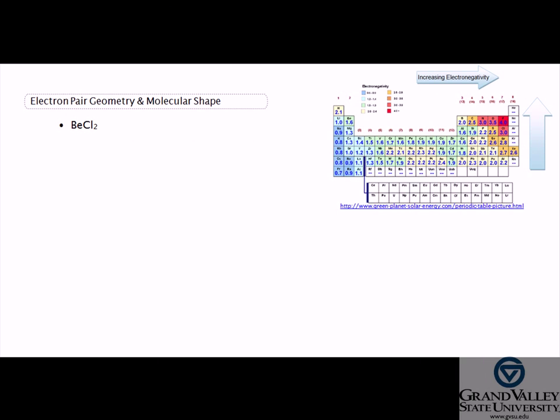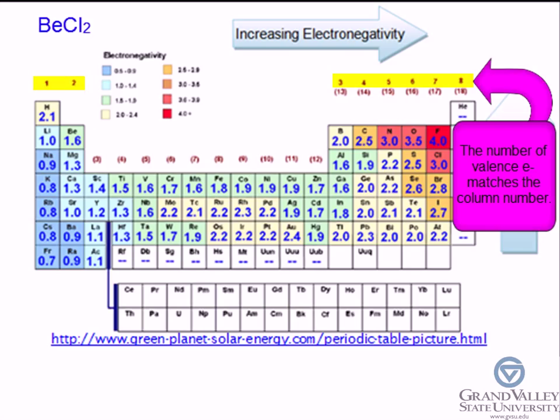In order to determine the electron pair geometry and molecular shape of BeCl₂, refer to the periodic table of elements to find the number of valence electrons for each element.